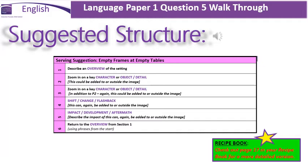The third paragraph is the same as section 2 but in addition to it. So if you zoom in on an object or a detail, in this paragraph zoom in on a key character. And remember, if there isn't a character in your image, drop one in — go beyond the image. The fourth section is a shift, a change or a flashback. The fifth section is the impact, describing the impact of the shift. And the final section is returning to the overview from section 1.